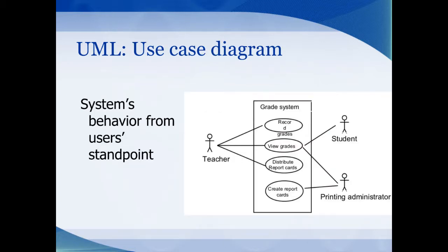Another type of UML diagram is called a use case diagram. This describes the system's behavior from a user's standpoint. In this case we have some type of grades application. If you're in the role of the teacher, you'd be able to record grades, view grades, and distribute report cards. Now a student wouldn't be able to record any grades. They'd only be able to view them.